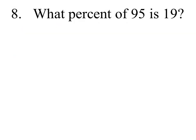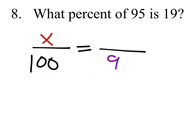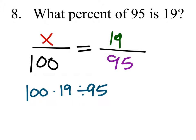What percent of 95 is 19? We're going to set this up using another proportion. It's out of 100, and in this case we don't know the percent, and it's of 95 is the 19. Now we have enough to set this up and to solve. So you'd have 100 times 19 divided by 95, which is the X, and it was 20. X is 20.